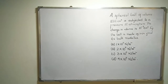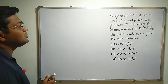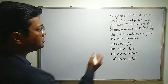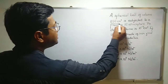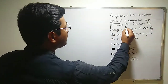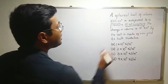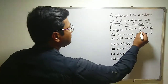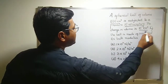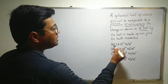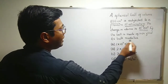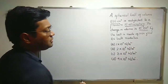Welcome everyone. The question is: a spherical ball of volume 1000 cm³ is subjected to a pressure of 10 atmosphere, and the change in volume is 10 to the power minus 2 cm³. The ball is made up of iron. Find its bulk modulus.